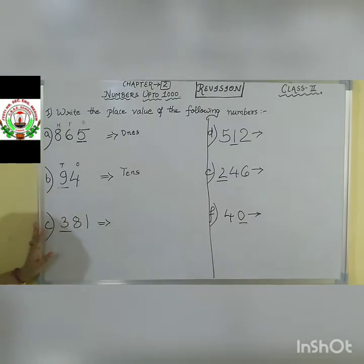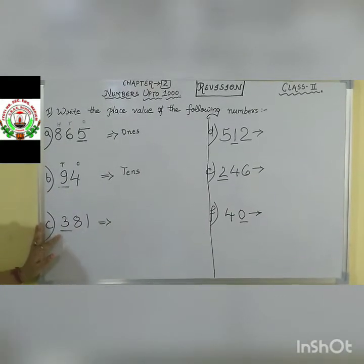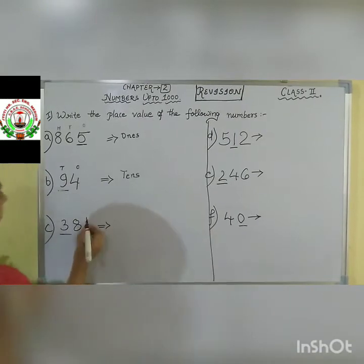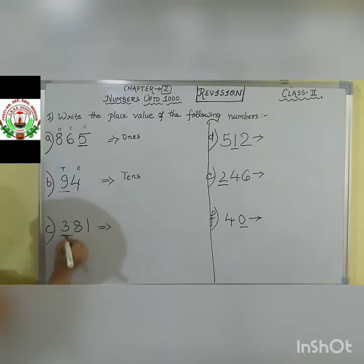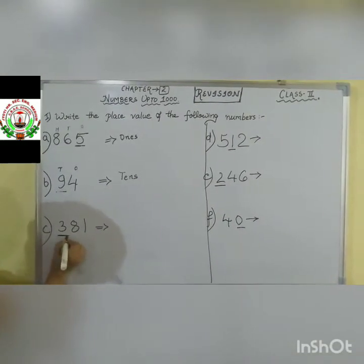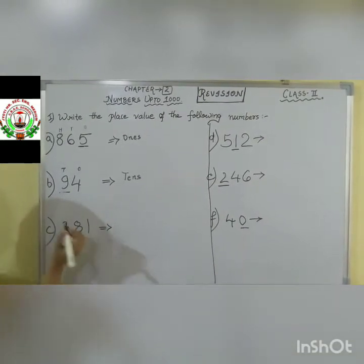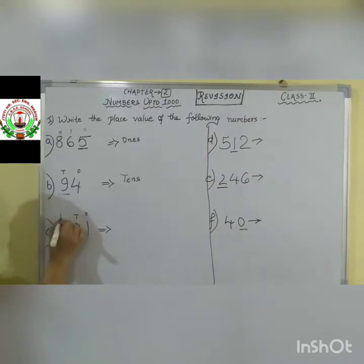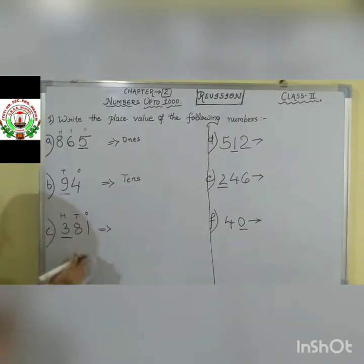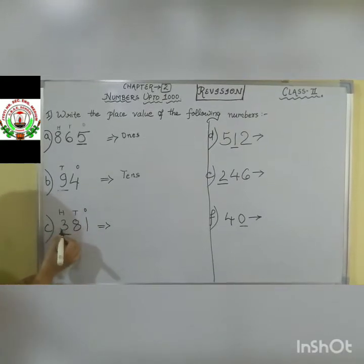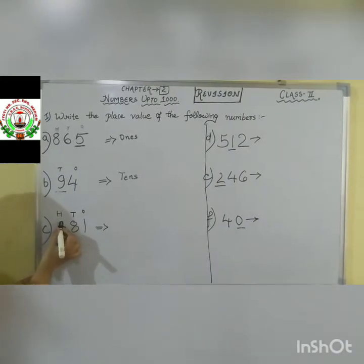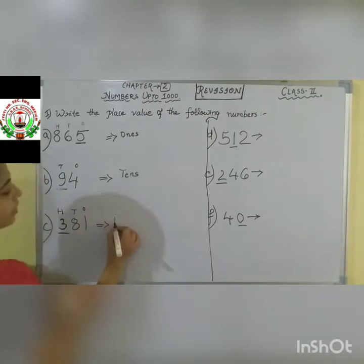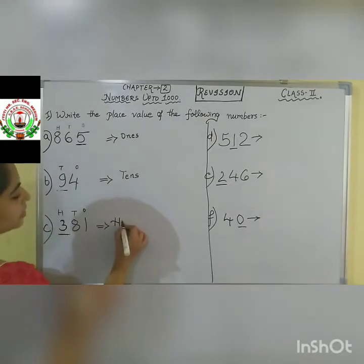Next question is about 381. We are asked about digit 3. Give the place value — 1's, 10's, and then 100. See, number 3 is coming under which place? 100's place. So we will write down as 100.